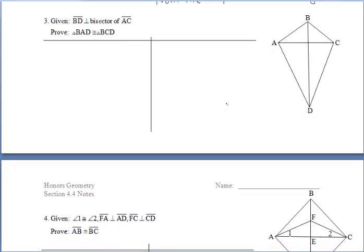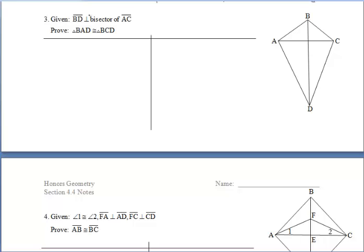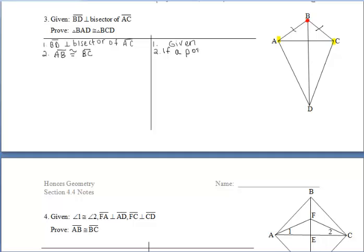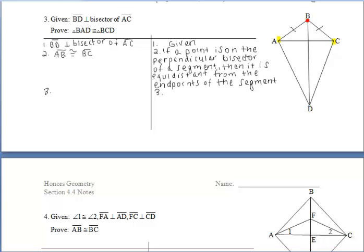Finally, let's take a look at example three. We're given that segment BD is the perpendicular bisector of segment AC. Since we're given a perpendicular bisector, let's look for points that lie on it and use those to get congruent segments. Point B lies on segment BD, so point B must be equidistant from the yellow endpoints A and C. That means segment AB is congruent to segment BC, because if a point lies on the perpendicular bisector of a segment, it is equidistant from the endpoints.